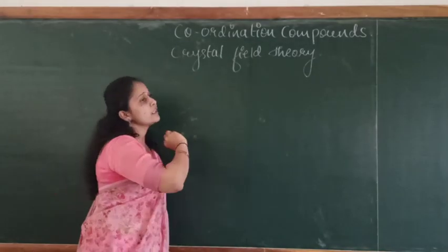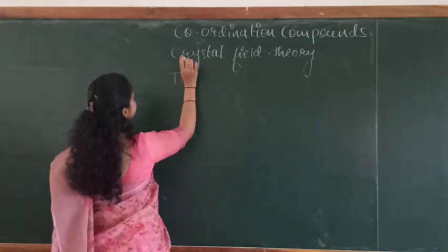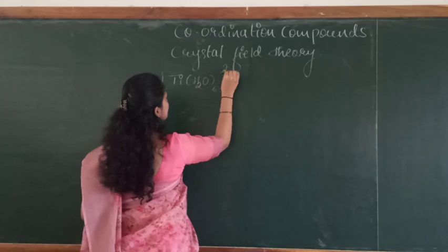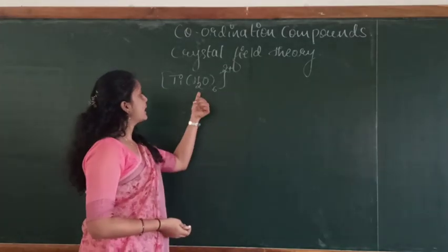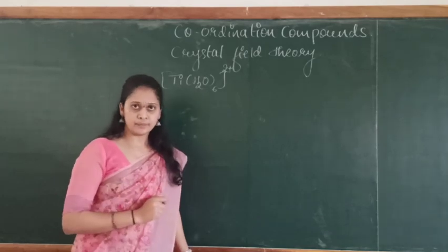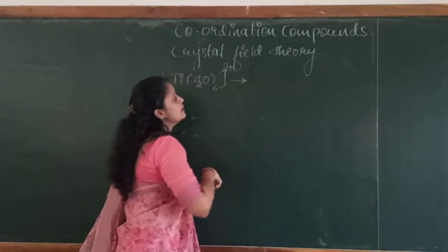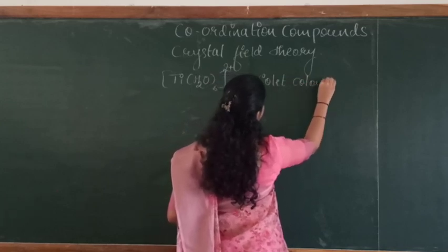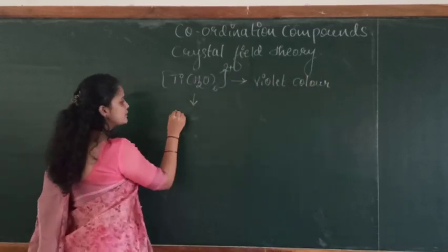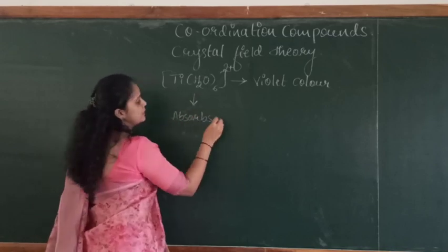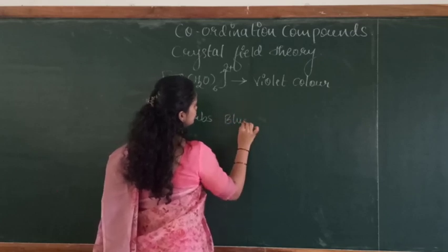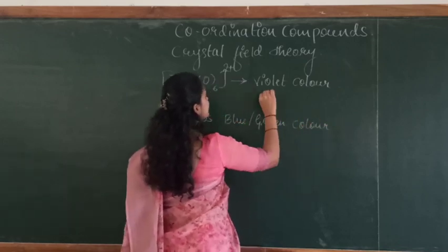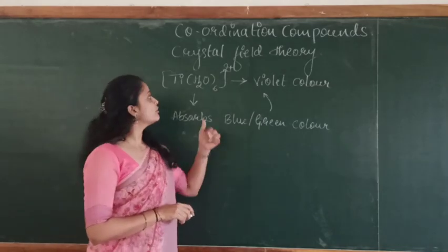Here in crystal field theory, we have the example of hexaaqua titanium(III) ion — [Ti(H₂O)₆]³⁺ complex. This compound has violet color. Why does it have violet color? Because it absorbs blue or green color, resulting in the violet coloration of this particular compound.